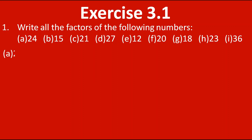The first number is 24. Factors means we have to find the numbers which can divide 24 exactly without leaving any remainder. As I have told you in my previous video, 1 and that number itself is always a factor of that number. So let's write: 1 into 24 gives us 24. Now let's find out in other tables whether we get 24.